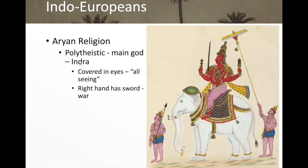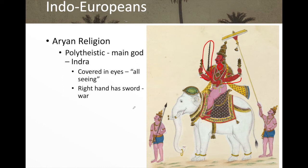The Aryan religion is polytheistic, with the main god being Indra — and here is a picture of Indra. Indra is covered in eyeballs all over his body, representing that Indra is all-seeing, able to see everything. In his right hand he holds a sword, and there are multiple arms, reflecting his identity as the god of war.